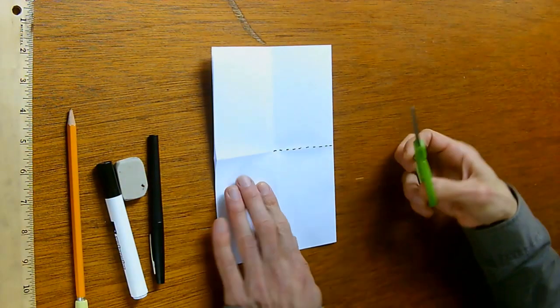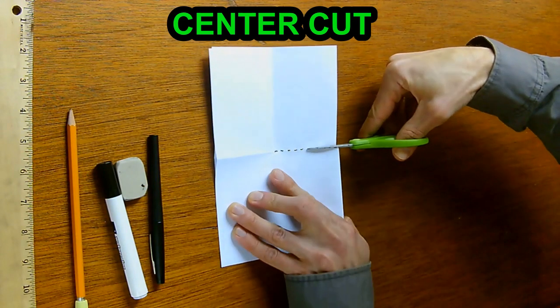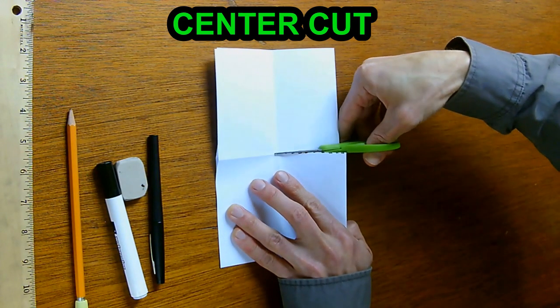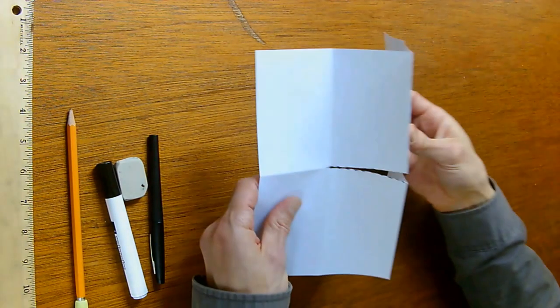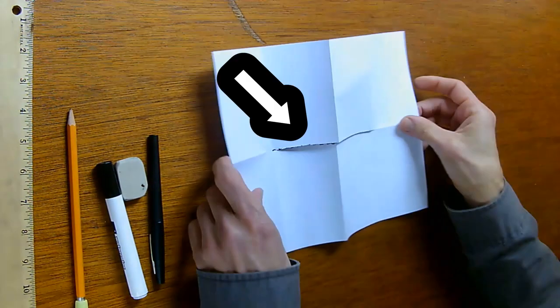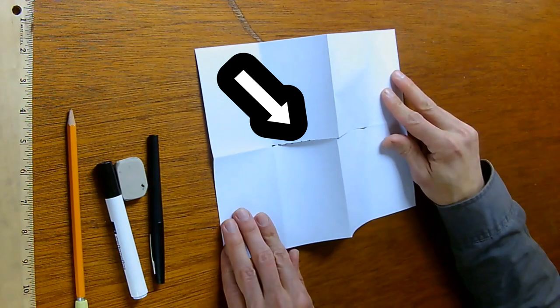I'm gonna grab the scissors and cut along, make my center cut along the fold just past the half line, a little past the half line, so that when I open up the paper I will have a center cut right across two folds there.